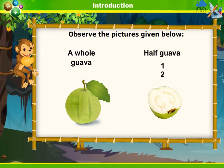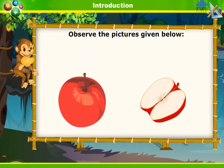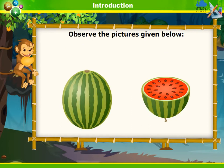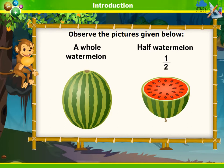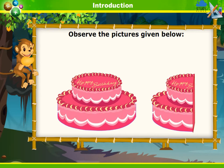Observe the pictures given below. The first picture is of a whole guava and a half guava. The second picture is of a whole apple and a half apple. The third picture is of a whole watermelon and a half watermelon. The fourth picture is of a whole cake and a half cake.